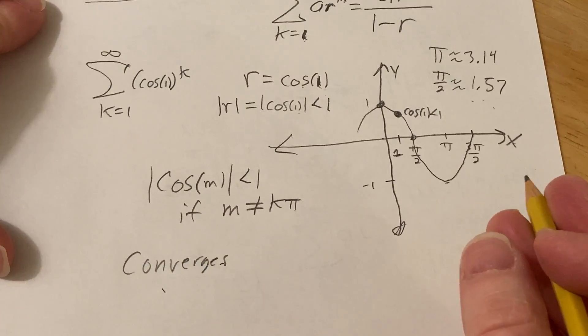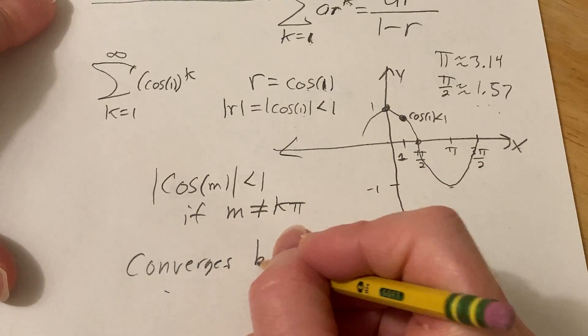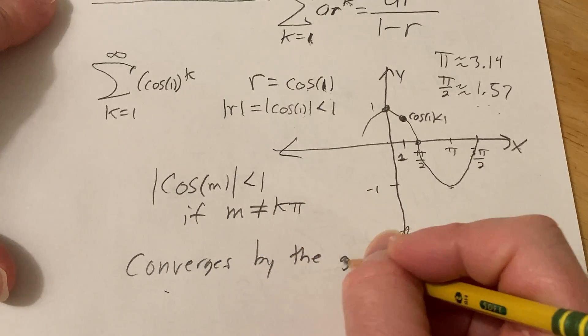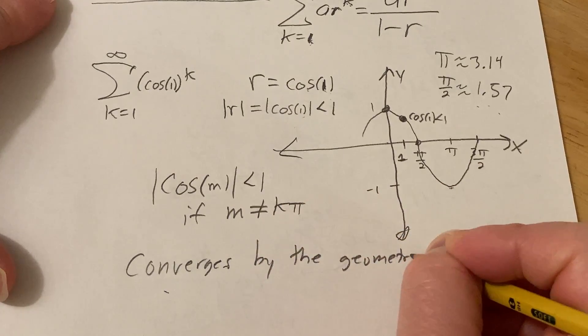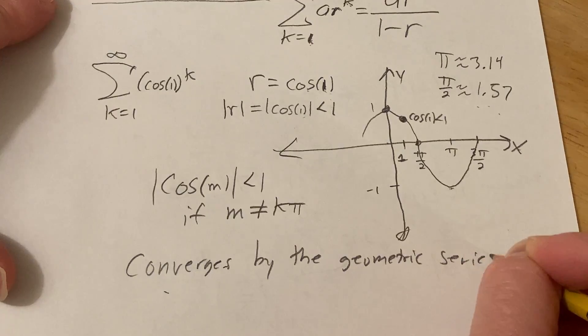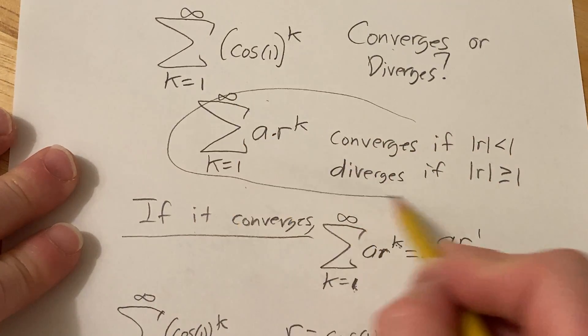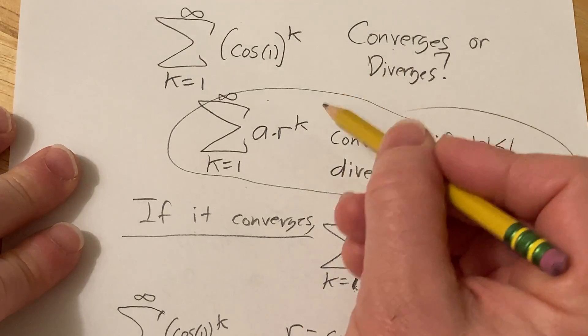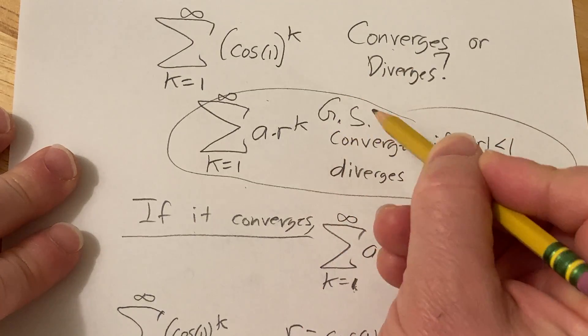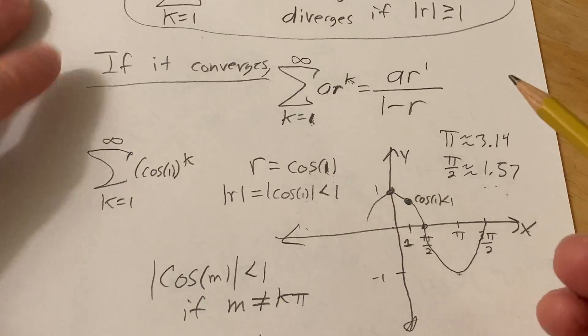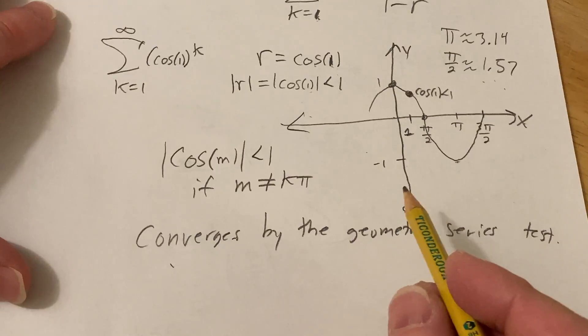And if you want to invoke something, you can say converges by the geometric series test. Some people call it that. The geometric series test, some books refer to this as the geometric series test, which we can abbreviate by GST. You can also just say it's a convergent geometric series. So it converges, so we have to find the sum.